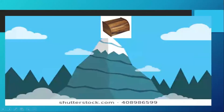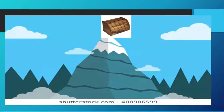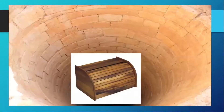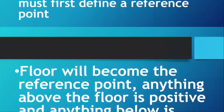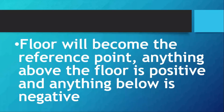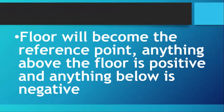Consider the same box placed in three different locations: on top of a mountain, on the floor, and underground. To compute gravitational potential energy, we must first define a reference point equivalent to zero. In this case, we use the floor as our reference point — anything above the floor is positive, and anything below is negative.